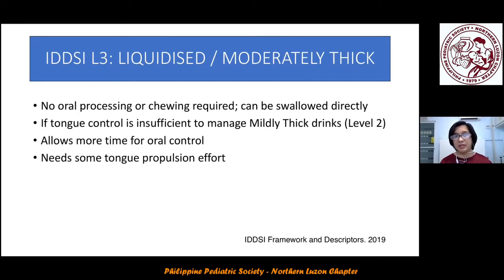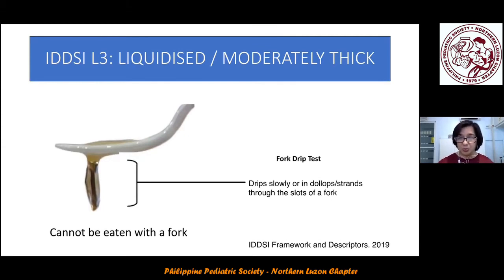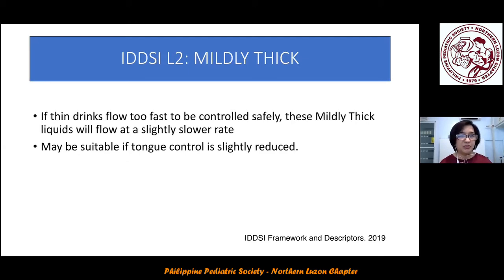For moderately thick, no oral processing or chewing is required — it can be swallowed directly. It is used when tongue control is insufficient to manage mildly thick drinks, allowing more time for oral control. For the fork drip test, it drips slowly in dollops or strands through the slots of a fork — you cannot eat this with a fork, so a spoon is used.